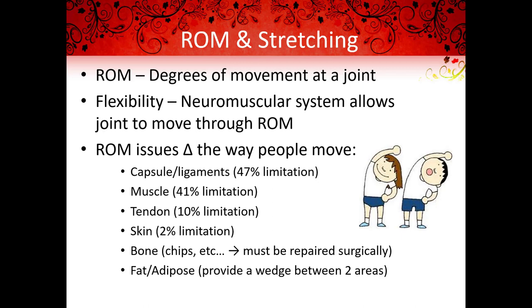A decrease in range of motion and/or flexibility in one joint can affect the entire kinetic chain. For example, a decreased range of motion or flexibility in the shoulder can impact the function of the entire arm. In order to provide a treatment for the loss of movement, the clinician must determine the specific cause — for example, whether it is due to joint effusion, adaptive shortening of the connective tissue structures, changes in bony architecture, or alignment of the articular surfaces.